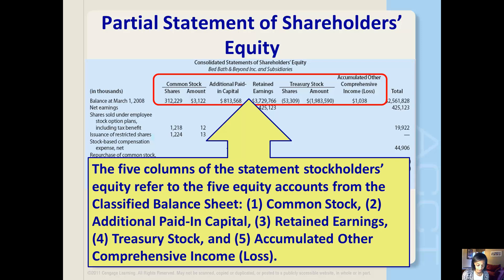The first two accounts represent the capital that has been contributed to the company through the issuance of stock. The third account, retained earnings, represents the equity that has been generated through profitable operations and retained in the business. Treasury stock is common stock that the company has purchased back from stockholders, so the balance in treasury stock is subtracted from stockholders' equity.